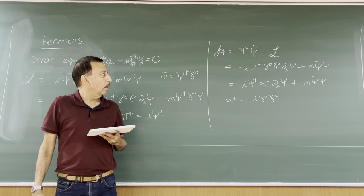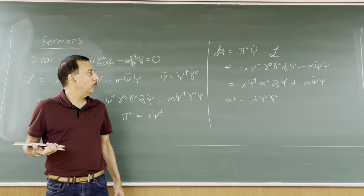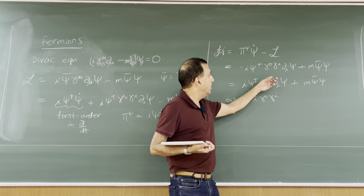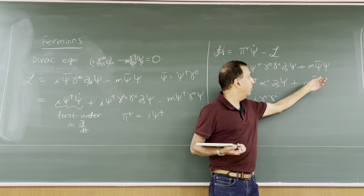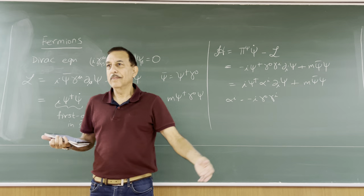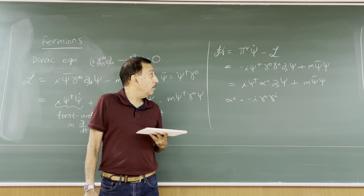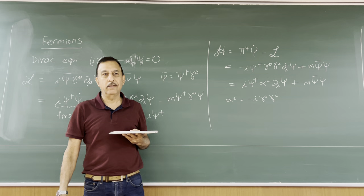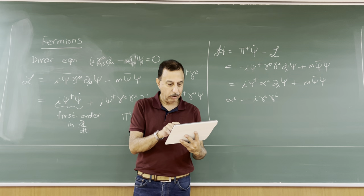The simplest example of how weird this is: imagine space-independent configurations and a massless fermion. Then the Hamiltonian is zero. That is strange, but essentially what happens is the system has two degenerate states of spin up and spin down with the same energy, which we can call zero. Fermions work in a very different way from bosons.